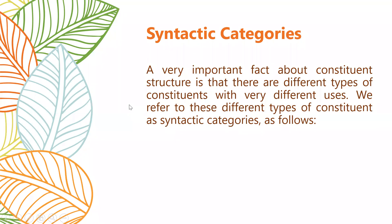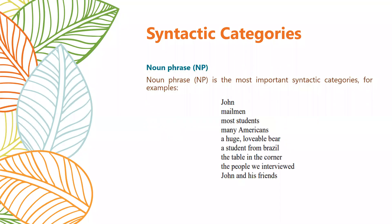An important fact about constituent structure is that there are different types of constituents with different uses. We refer to these as syntactic categories. There are five syntactic categories: noun phrase (NP), verb phrase (VP), adverb phrase, adjective phrase, and prepositional phrase.